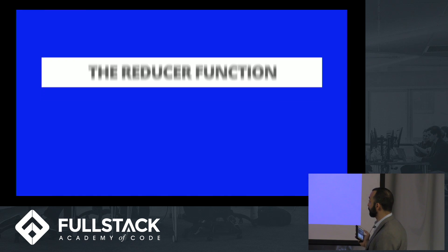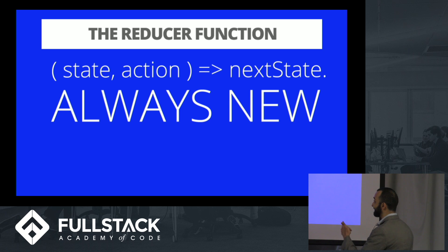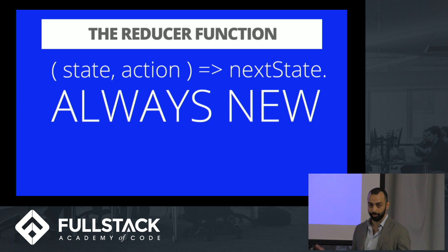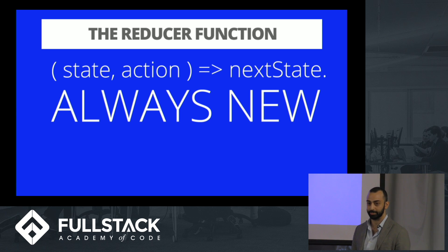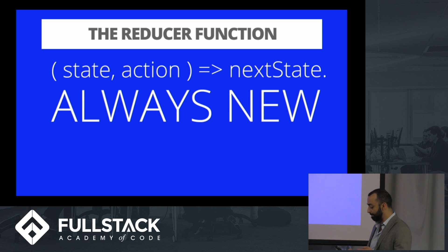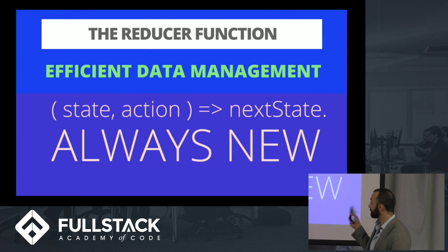The reducer function takes in a state and that action object. State is your current state as you know it, and what it returns is the next state — and it's always new. What's good about this is that it helps you normalize the data in your application so you're not having duplicates. It's almost like having a mini database. The new state isn't just piling up — you don't hold onto old states, they get garbage collected, and parts of the old state get reused, which makes it really good for efficient data management.